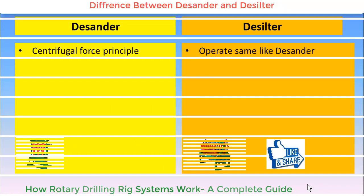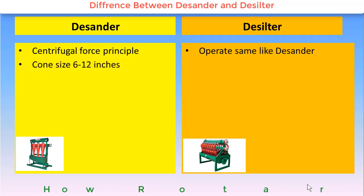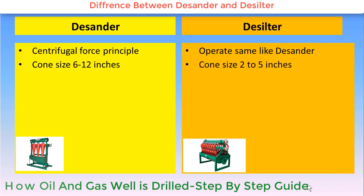For desander, cone size may vary from 6 to 12 inches, whereas cone size in desilter can be 2 to 5 inches.